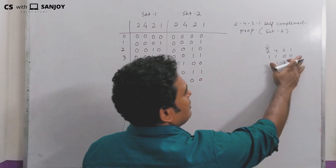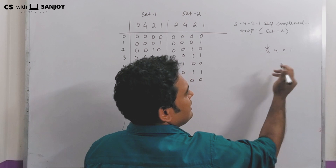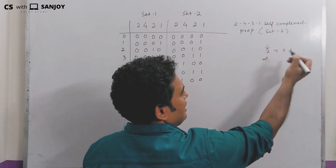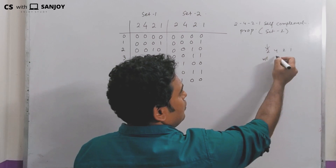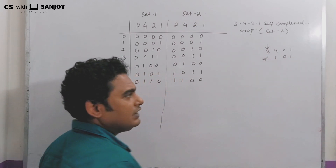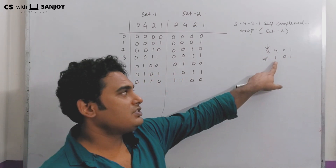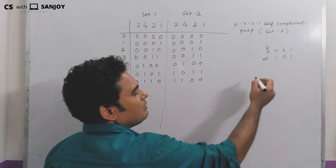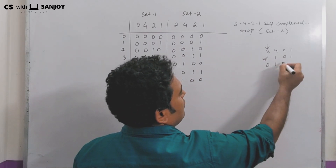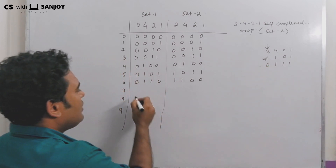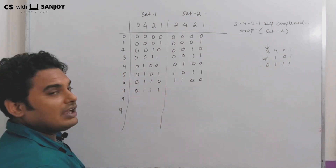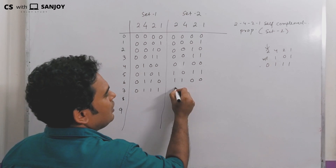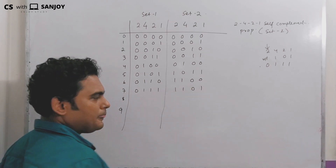For digit 7: one representation uses weights 4, 2, 0, 1 giving 4 plus 2 plus 1 equals 7, and another representation is 0111. Set 1 writes 0111 and Set 2 writes 1101.